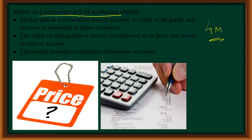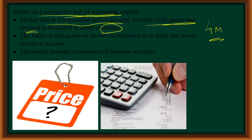The second function is the measure of value. Here, measure of value means all goods and services will be measured in terms of money. Because of this reason, money acts as a convenient unit of accounting. Whatever goods and services you buy in the market, the value of those goods and services will be expressed in terms of money. For example, when you buy a pen, the price or value of the pen is expressed in terms of money, like 10 rupees or 20 rupees. The value of each good and service is expressed as its price.